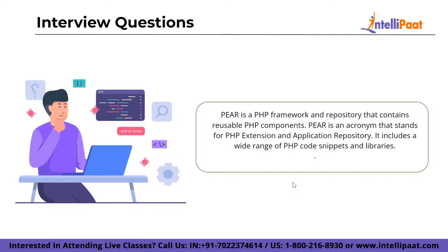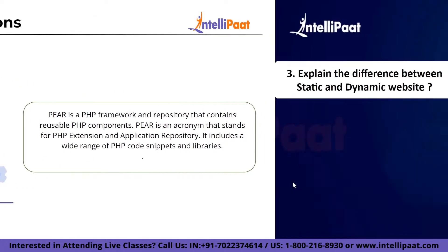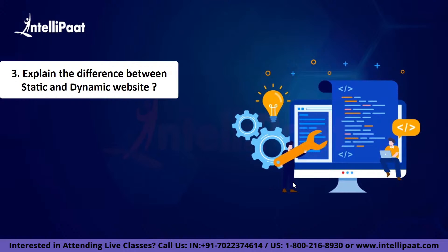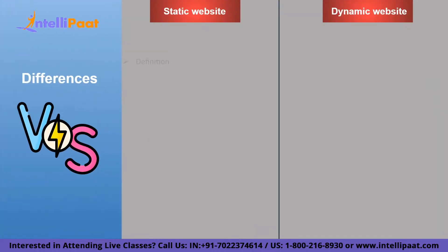Now let's discuss the third question: explain the difference between a static and a dynamic website. A static website is the one which is consistent with the content where every user sees the same thing on every page. Whereas a dynamic website is the one in which content is pulled in real time, allowing it to change with the user.